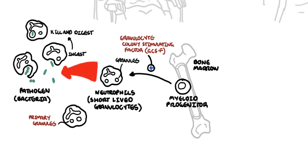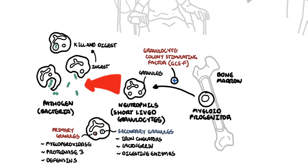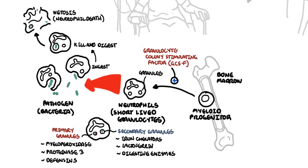Neutrophils have primary granules which contain myeloperoxidase, proteinase 3 and defensins. They also contain secondary granules with iron chelators, lactoferrin and digestive enzymes — all of which are important in killing, digesting, and ingesting microbes. Neutrophils will actually die at the site of infection or inflammation and contribute to the formation of NETs, which are components of the neutrophils that are released and help trap and kill other surrounding pathogens.